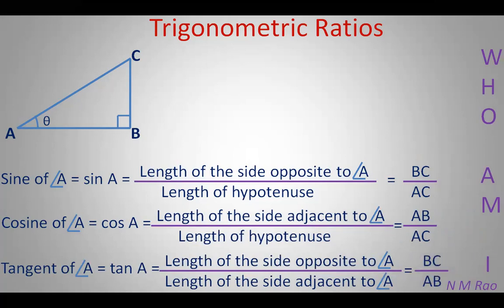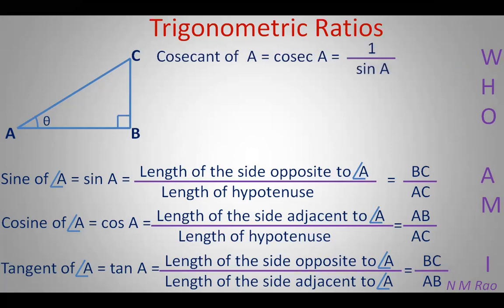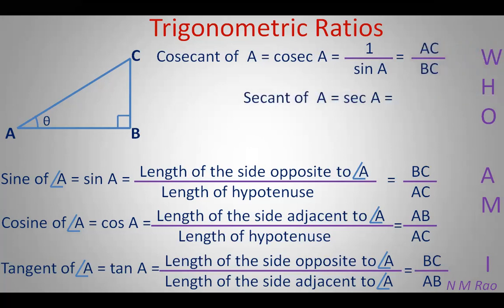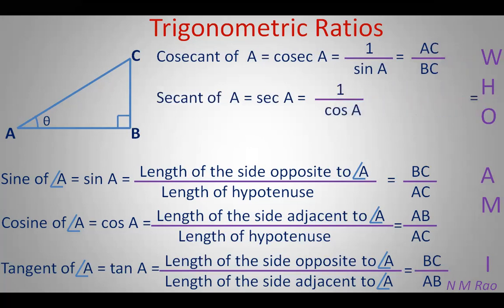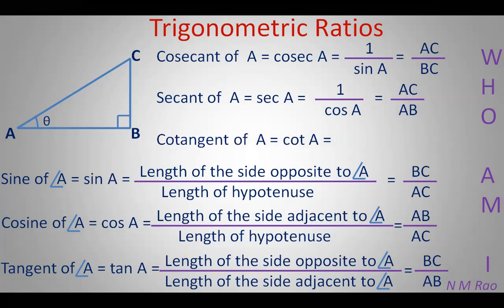If we remember these three trigonometric ratios, we can define another three trigonometric ratios which are reciprocals of these three. Cosecant of angle A, written as cosec A, is the reciprocal of sin A. If sin A is BC/AC, then cosec A is AC upon BC. Secant of angle A, written as sec A, is the reciprocal of cos A. Cotangent of angle A, written as cot A, is the reciprocal of tan A. Since tan A is BC/AB, cot A is AB upon BC.